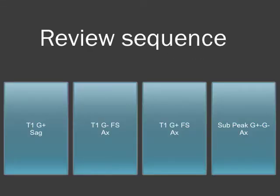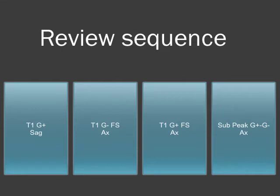This is the way I lay out the images on my monitors. I use a 2x2 display: on the far left, the T1 gadolinium-enhanced sagittal sequence, then the T1 no-gadolinium fat-saturated axials, followed by the T1 gadolinium-enhanced fat-saturated axials, and then on the right the peak subtraction sequence. The other sequences such as the non-fat-saturated T1 images or the T2 images I swap in as necessary. I think you need to have these images large to be able to see them, and I personally don't find the advantage of seeing eight different sequences at once.